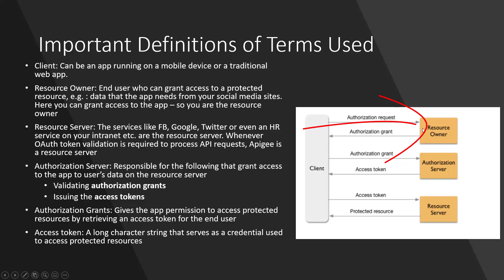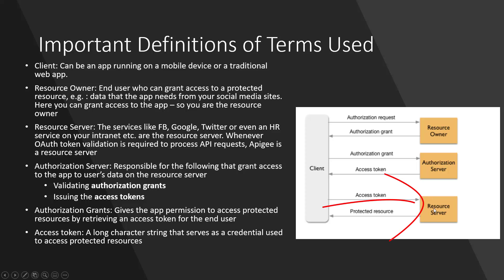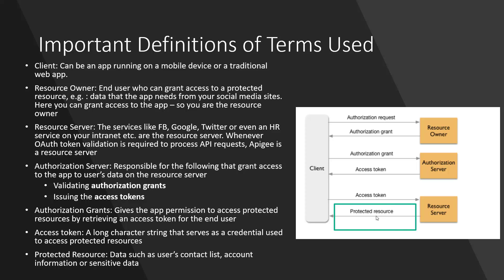Here is the workflow: the client makes an authorization request to the resource owner, who is the end user that can grant access to the protected resource. The client receives the authorization grant from the resource owner, then takes that authorization grant to the authorization server, which validates it and issues an access token. With this access token, the client app goes to the resource server — services like Facebook, Google, Twitter, or an HR intranet service — and gets the protected resource. The protected resource is data such as the user's contact list, account information, or other sensitive data.